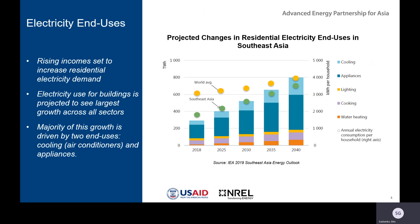The second trend is that looking at specific sectors, there is a lot of change and growth in residential electricity demand, largely due to rising incomes. Electricity used for buildings is projected to see the largest growth across all sectors, and the majority of this growth is driven by two end uses: cooling, largely from the increased use of air conditioners, and the increased use of appliances. Looking at the figure to our right, we see projected growth in cooling and appliance use over the next 20 years.